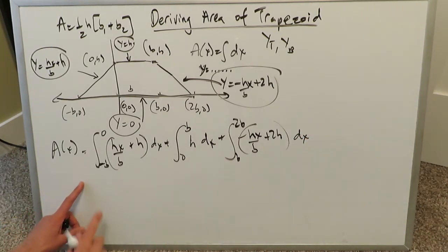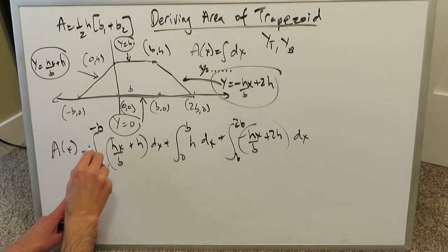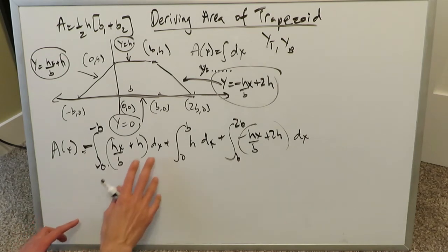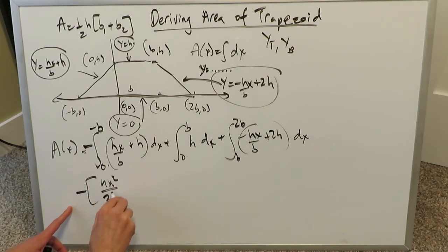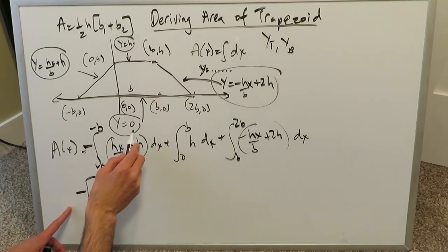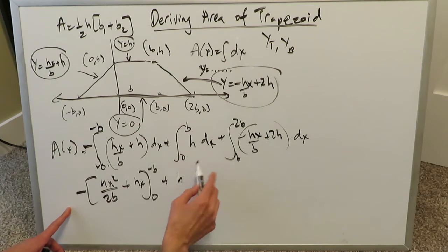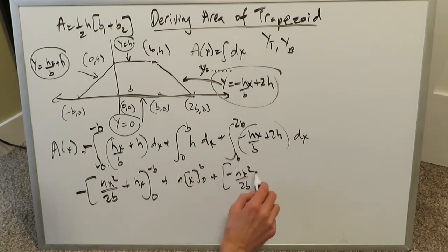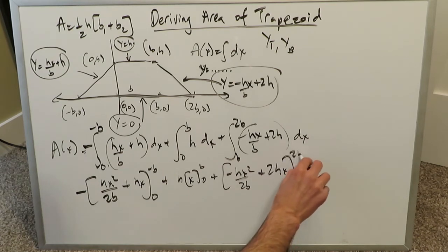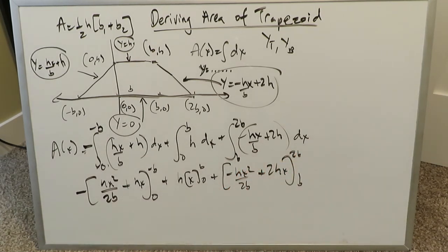Now we integrate. Using properties of integrals we can switch variable positions with a minus sign. With respect to x: the first integral from −b to 0 of (h/b)x + h gives hx²/(2b) + hx. The second integral from 0 to b of h gives hx. The third integral from 2b to b of −(h/b)x + 2h gives −hx²/(2b) + 2hx. Remember, x is to the power 1, so applying the power rule gives x² divided by 2.